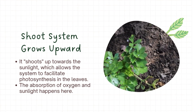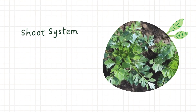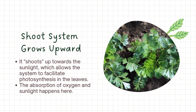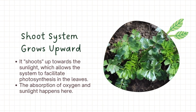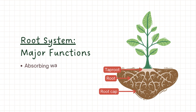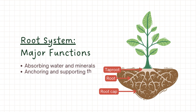The root system's major function is it absorbs water and minerals, anchors and supports the plant, and it stores food.